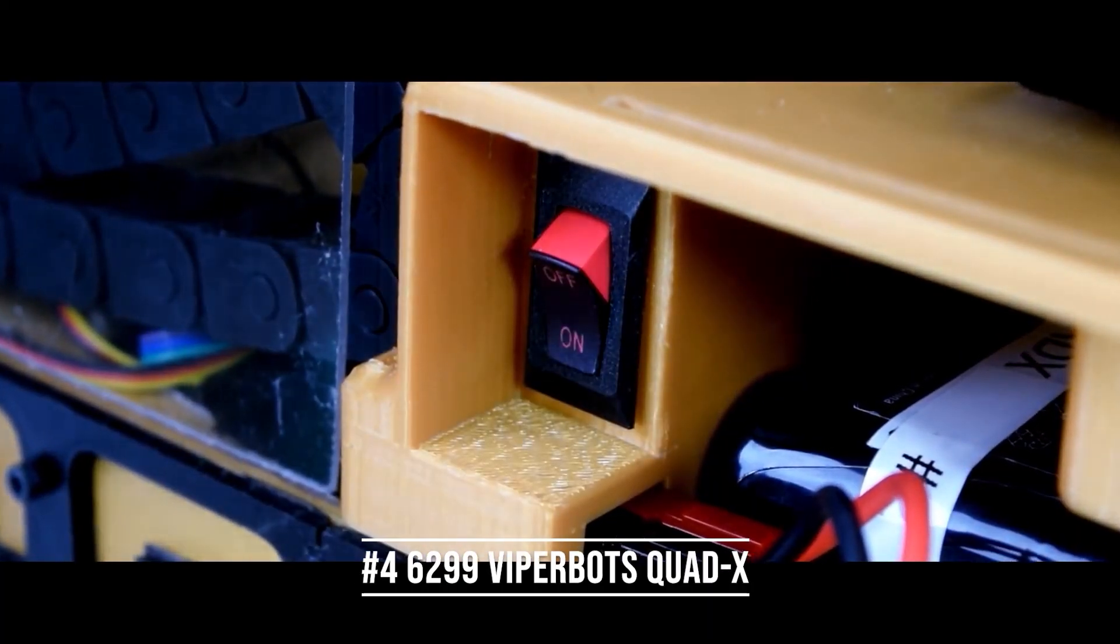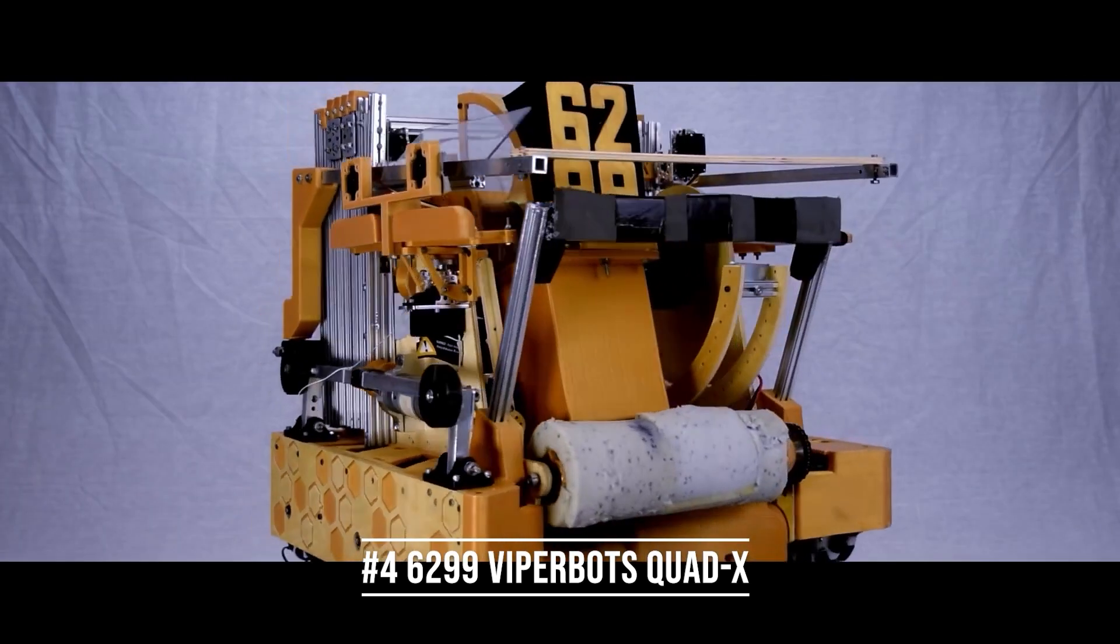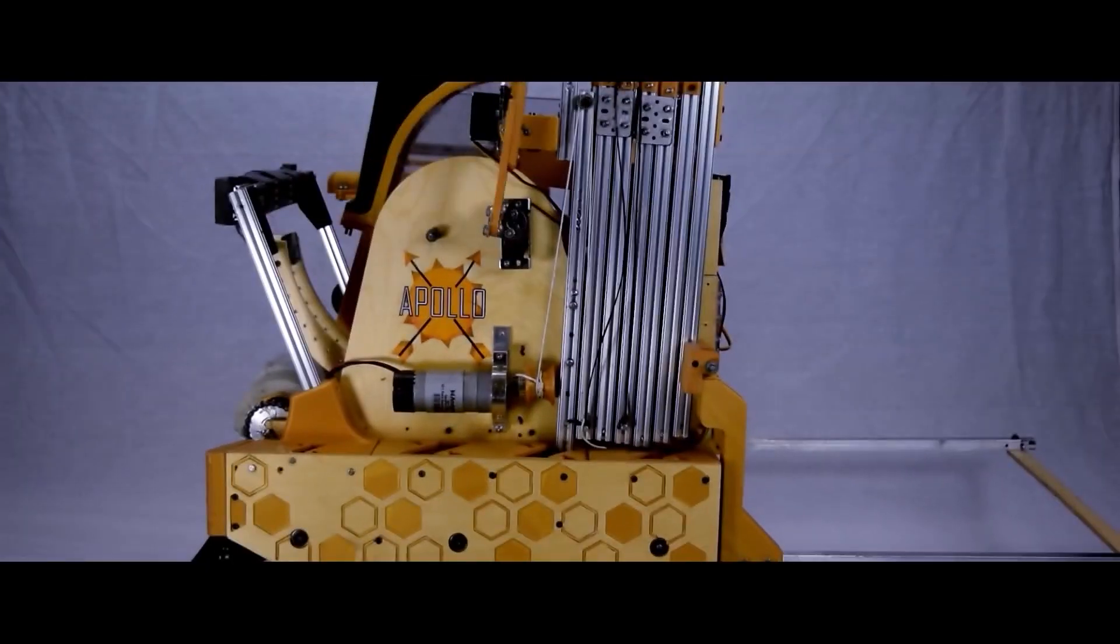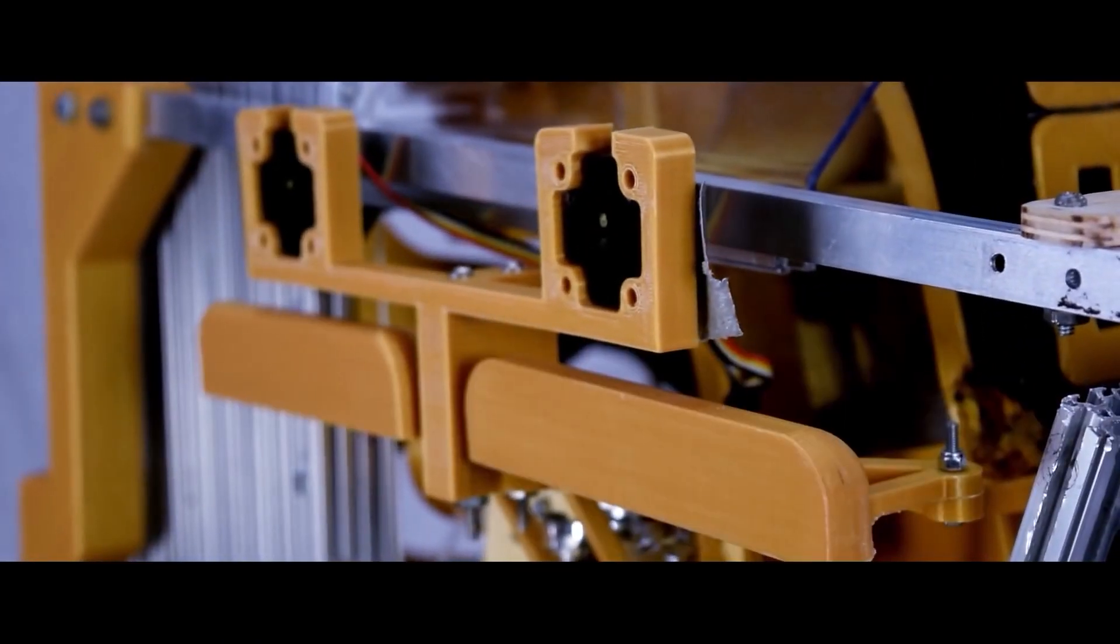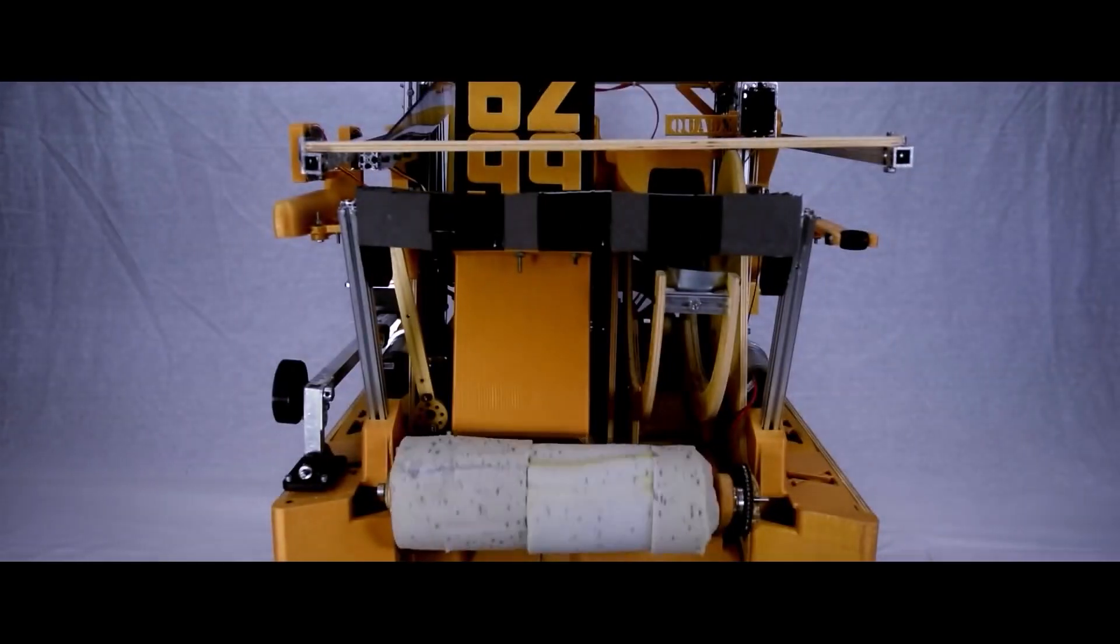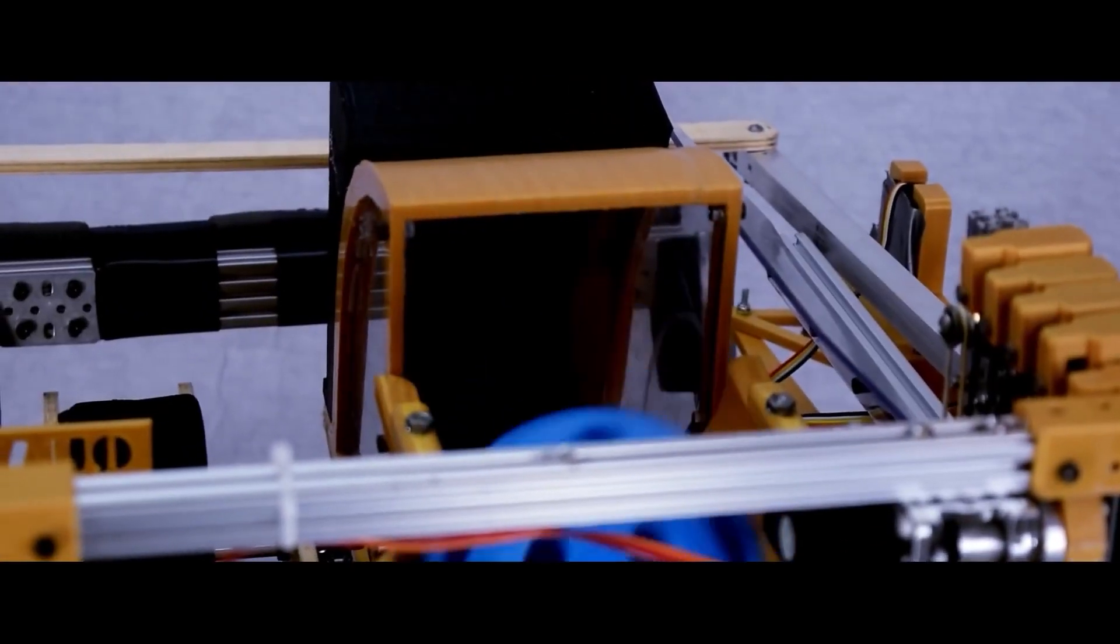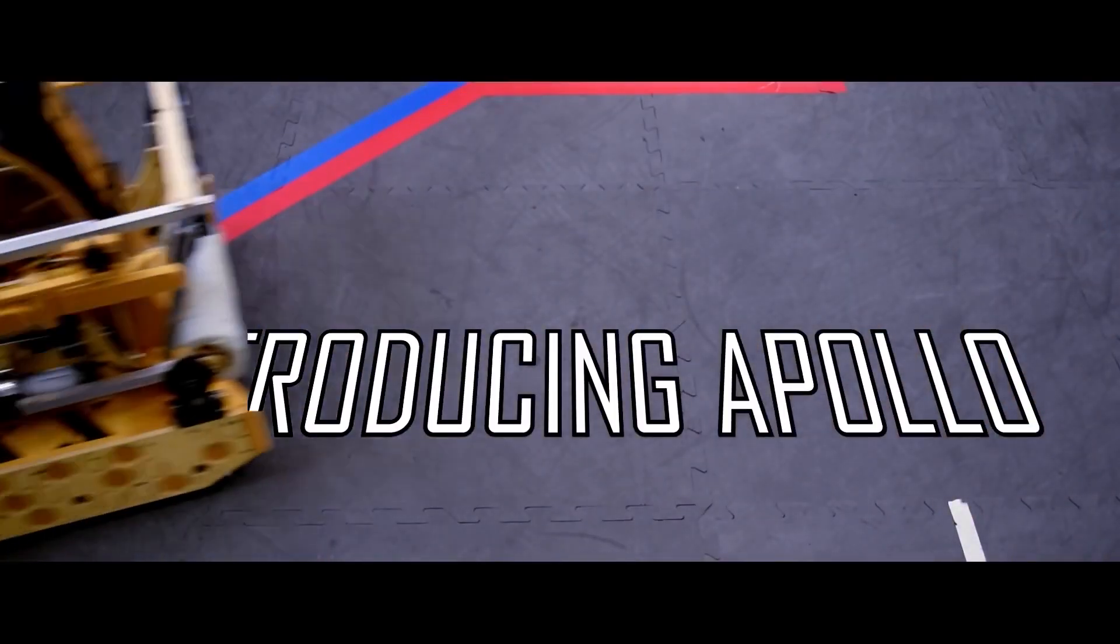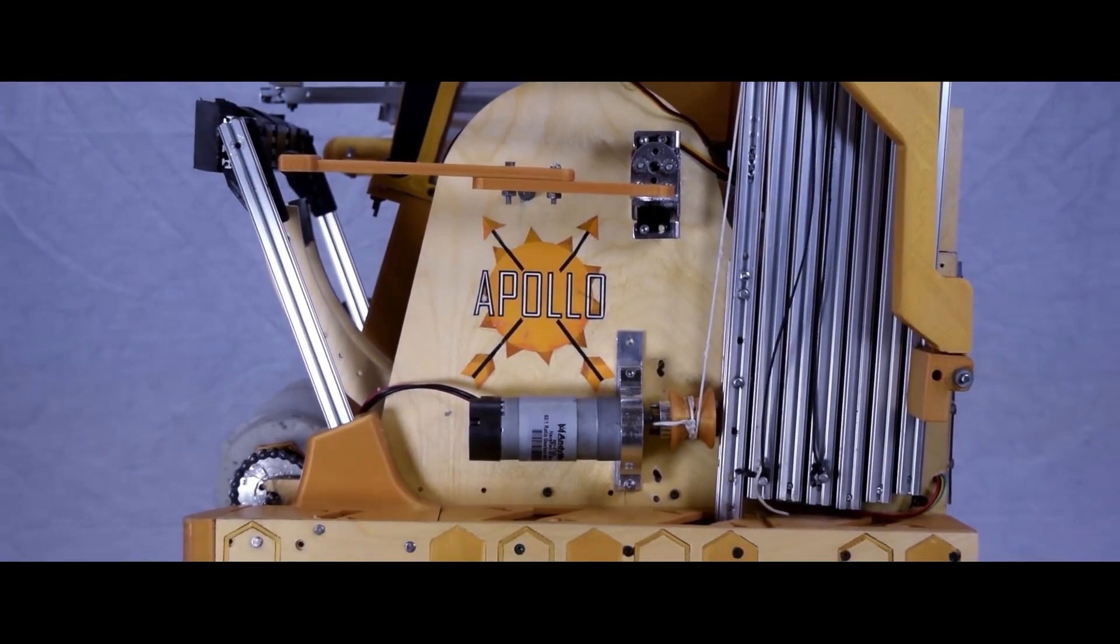Taking the number four spot is team 6299 Quad X and their velocity vortex reveal. They do such a good job syncing the video and audio in this reveal. The beginning has music matching turning on and off their robot and they do a lighting pulse matching the music as well. Like most of these top reveals they do a great job with camera blurs and showcasing the capabilities of their robot. The thing that sets this reveal apart is their animation specifically at the beginning and the end. The animations are integrated beautifully into the reveal and add that extra cherry on top.